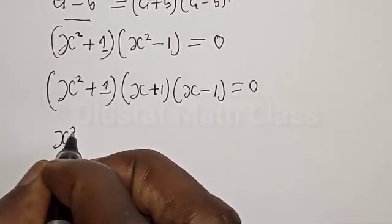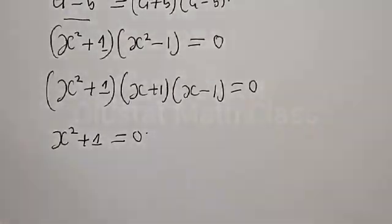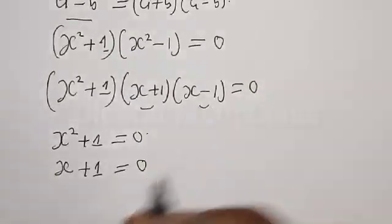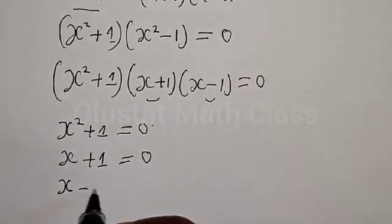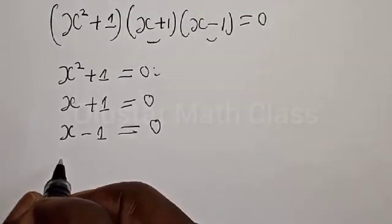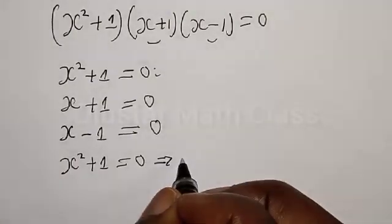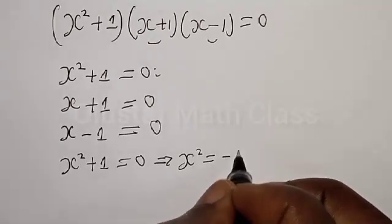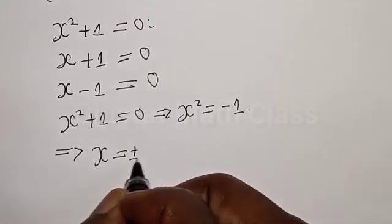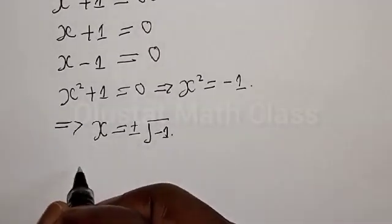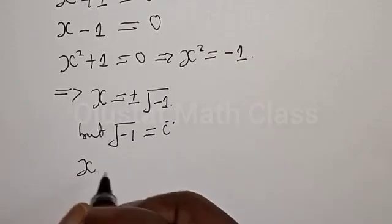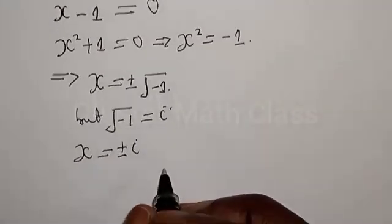From the first factor we have s squared plus 1 equal to 0. Also for the second factor we have s plus 1 equal to 0. Now let's solve: from s squared plus 1 equal to 0, we get s squared equal to minus 1, which can be expressed as s equal to plus or minus the square root of minus 1.